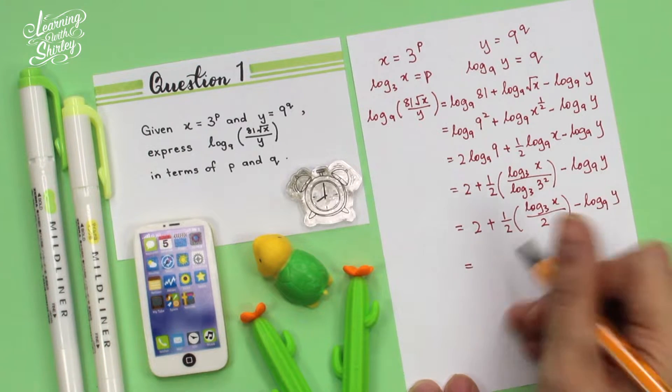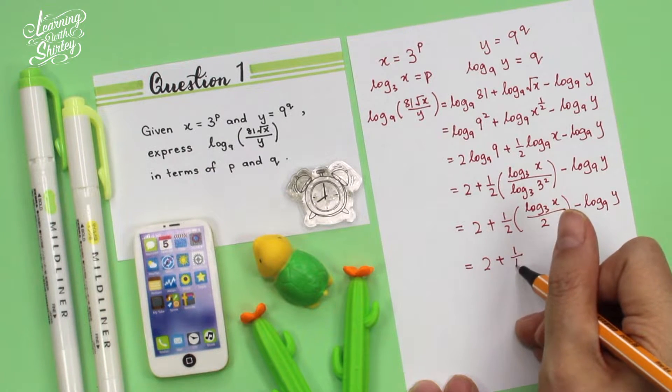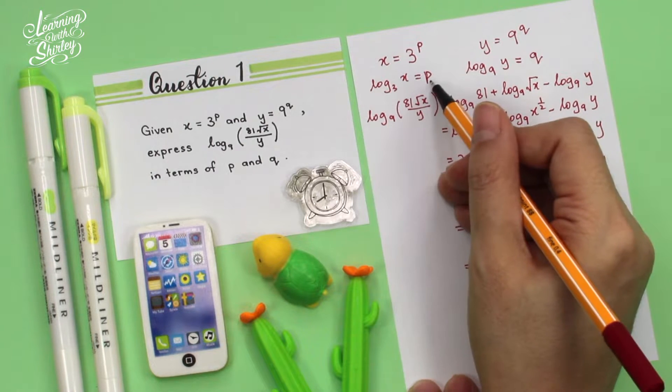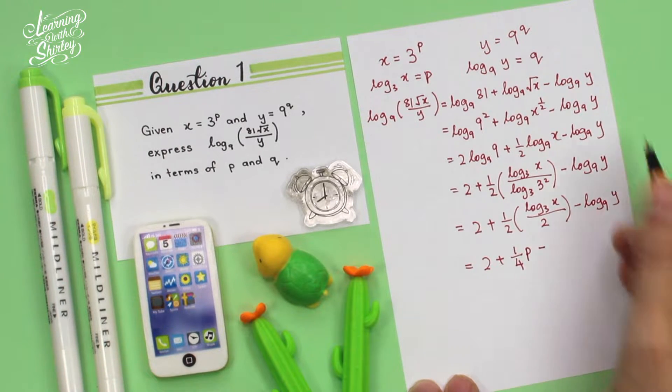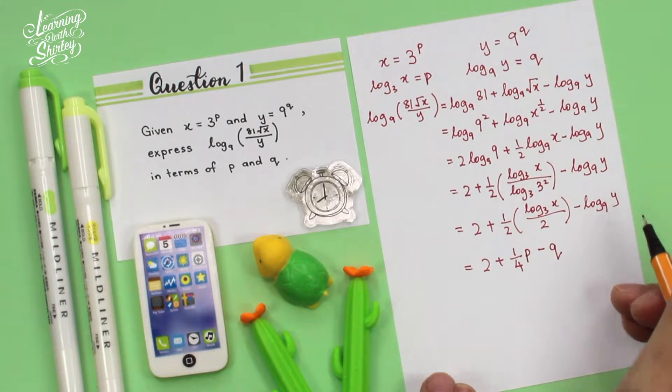So equals 2 plus, so 2 times 2 is 4, so here becomes 1/4, and log base 3 of x is equal to p. So I'm going to substitute p over here, and this one will be minus log base 9 of y which equals q. So the answer is 2 + p/4 - q.